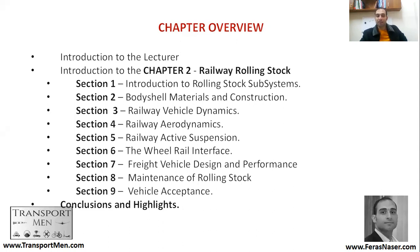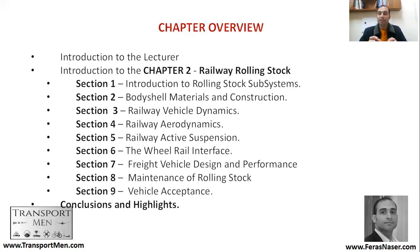In Section 5, we'll be talking about the railway active suspension system. In Section 6, we'll be talking about the wheel-rail interface. We discussed how the railway is a system consisting of a number of interfaces — vehicle to infrastructure, vehicle to platform, vehicle to pantograph, vehicle to vehicle — but one of the most important interfaces is the rail-wheel interface, where all the load happens on a small coin-sized area called the contact patch. In Section 7, we'll be talking about freight vehicle design and performance.